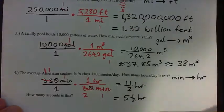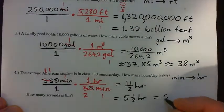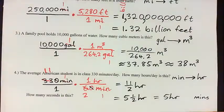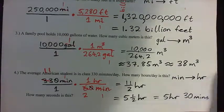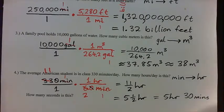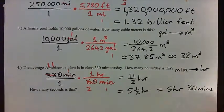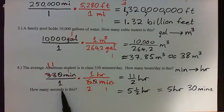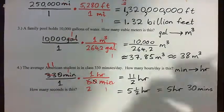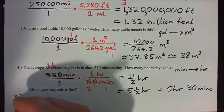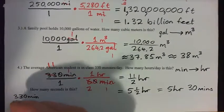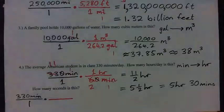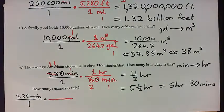That's 5.5 hours, or five hours and thirty minutes. Now the next question: how many seconds is 330 minutes? So we go back to 330 minutes over 1 and want to convert to seconds. Press pause, do it yourself, and then I'll do it.